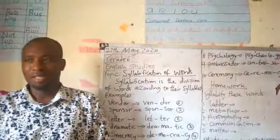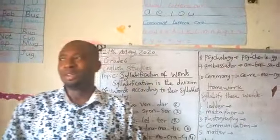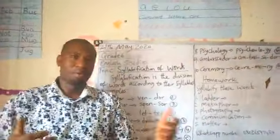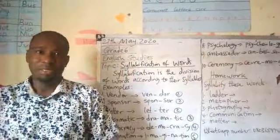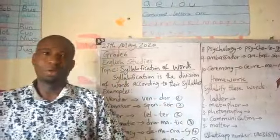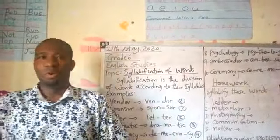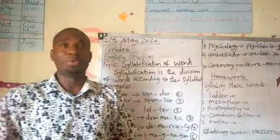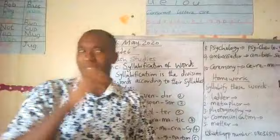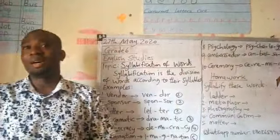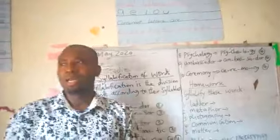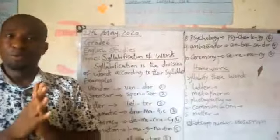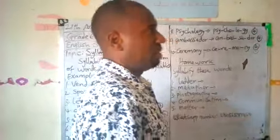Last time you looked at the types of syllables. When you syllabify your words, it can be monosyllabic, bisyllabic, or polysyllabic. In monosyllabic, it means that the words have one syllable. Words that are of one syllable are called monosyllabic. Words that are made up of two syllables are called bisyllabic or disyllabic words. Words that have three or more syllables are called polysyllabic words.